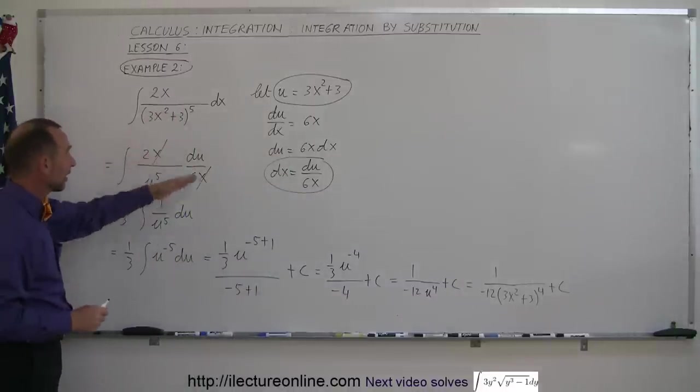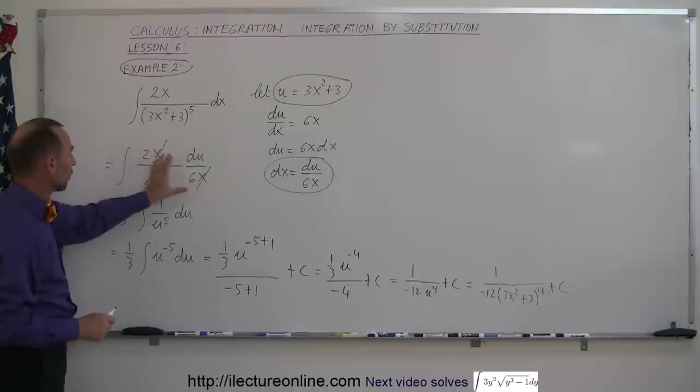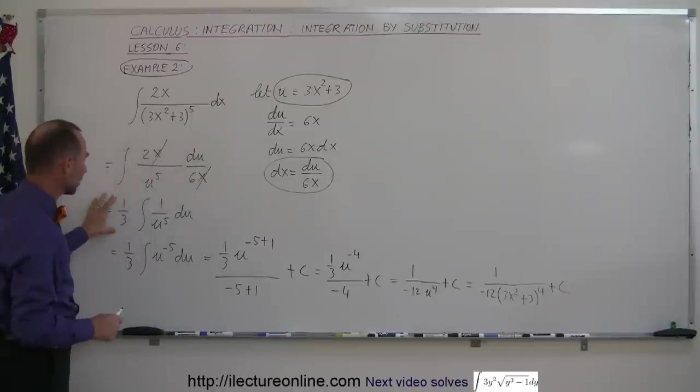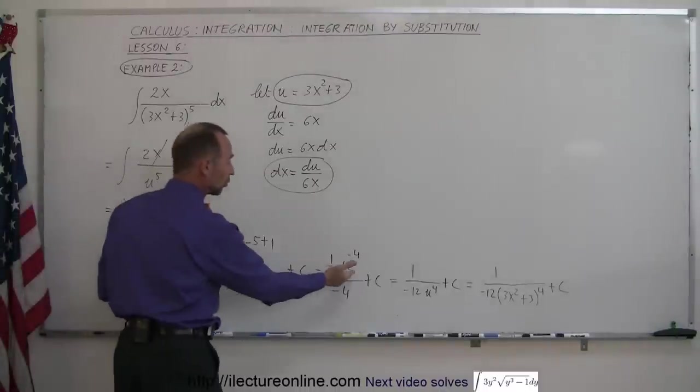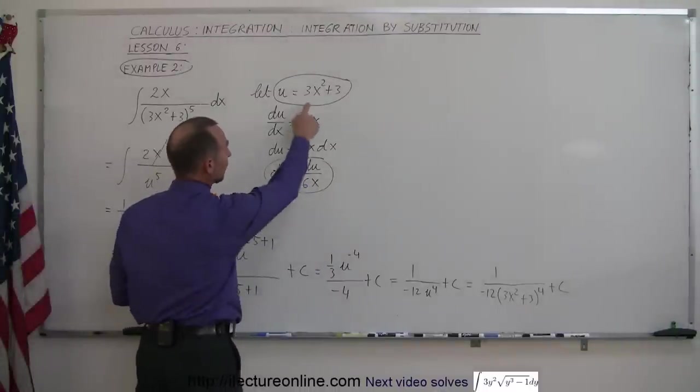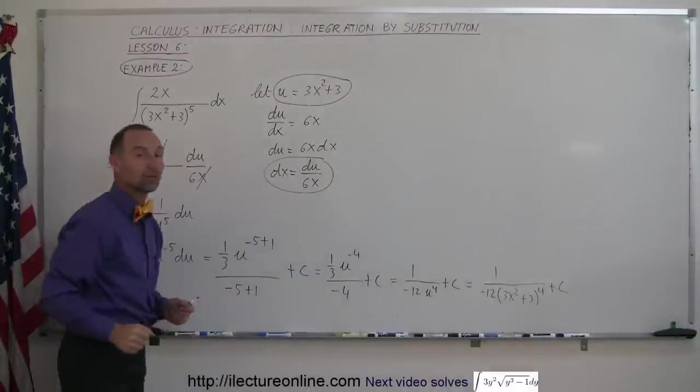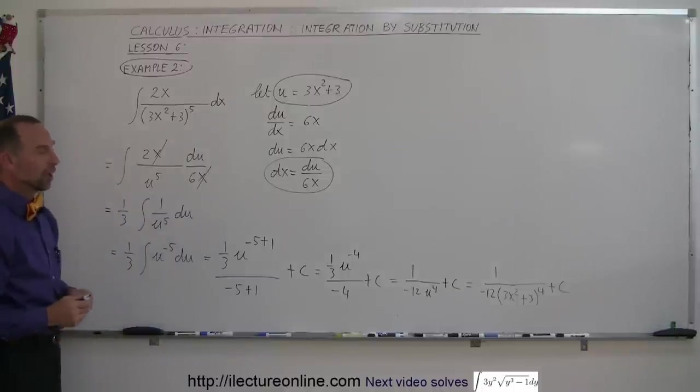The object is to get rid of the x's so they cancel. The 2 over 6 is 1/3, which comes outside the integral sign. Now you have 1 over u to the 5th du. To integrate it, you move it to the numerator with a negative exponent, then you simply use the power rule, and then you substitute back in what u equals to get the final answer in terms of x. That's how you do that one, and many more examples to come.